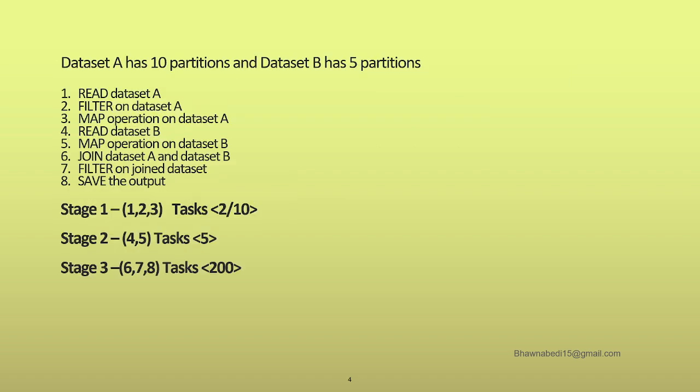Remember one thing: stage 1, which involves operations 1, 2, and 3 on dataset A, has 10 tasks because it has 10 partitions. But in some cases, if your data is very small, Spark will look out for the minimum number of partitions. By default the minimum number of partitions in Spark is 2, so if your data is very small, it might create only 2 tasks based on that minimum partition setting.